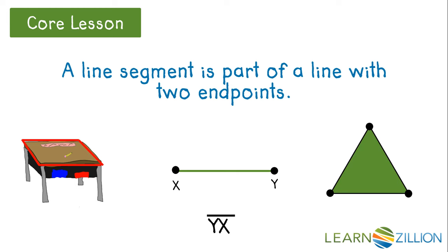Take a look at this triangle. We have A, B, and C. This line segment could be called AC or CA. This line segment could be called AB or BA. And this line segment could be called CB or BC.